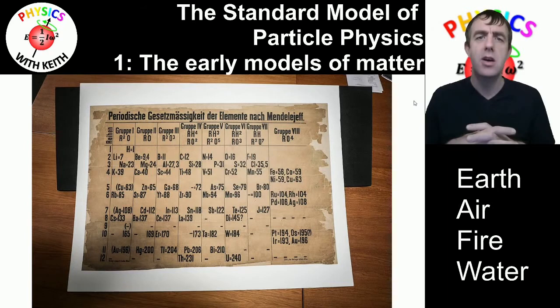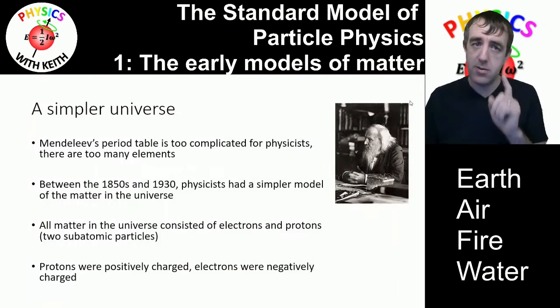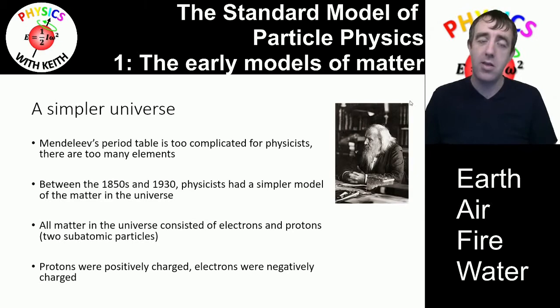But for physicists, that's a bit too complicated. We like the universe as simple as possible, and there are just too many elements. 92 elements going all the way up to uranium is just far too many for a physicist to cope with.